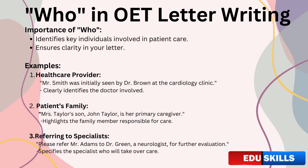In OET letter writing, clarity is paramount. Misidentifying or omitting who can lead to confusion — imagine a situation where it's unclear who is responsible for a specific task or aspect of care; it could result in a delay in treatment or miscommunication. A common mistake is being too vague when using who. For instance, writing 'the patient was advised to see a specialist' is not as clear as specifying who the specialist is. Always aim to provide as much relevant detail as possible. In OET letter writing, who isn't just about asking questions — it's about clearly identifying the key players in the patient's care.